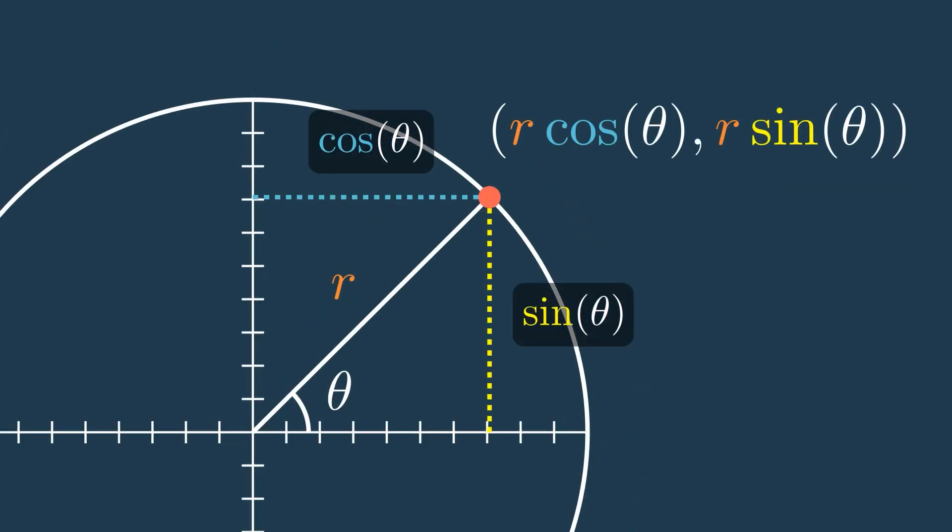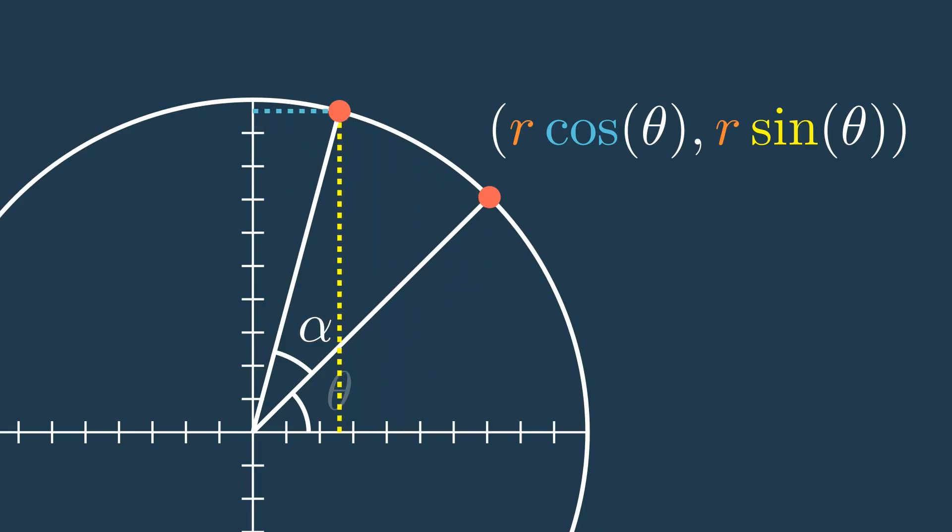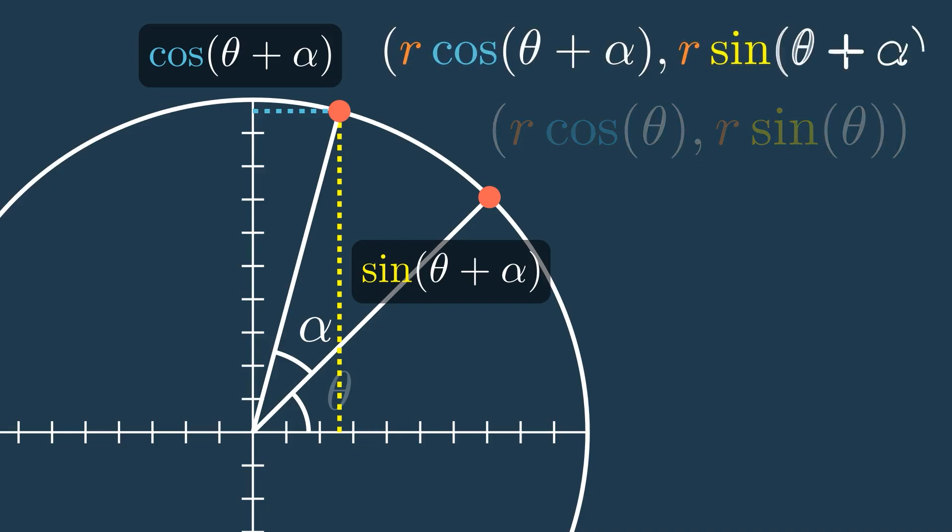As we saw before, we can express a vector's x and y coordinates in terms of its angle and magnitude, where the x coordinate is r times the cosine of theta, and the y coordinate is r times the sine of theta. If we rotate that vector by some new angle alpha, where the total angle is now theta plus alpha, then the x coordinate will be r times the cosine of theta plus alpha, and the y will be r times the sine of theta plus alpha.